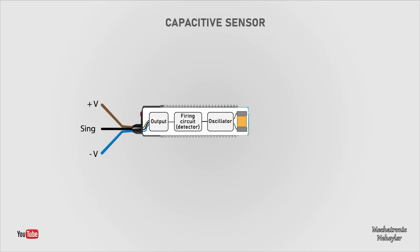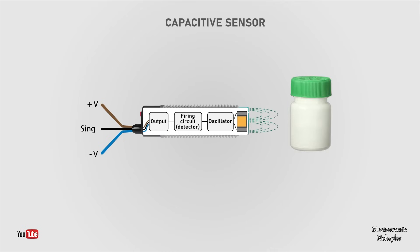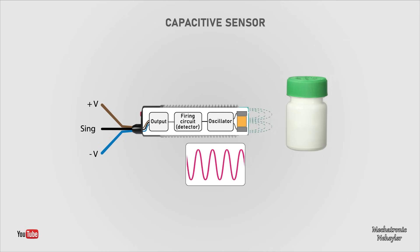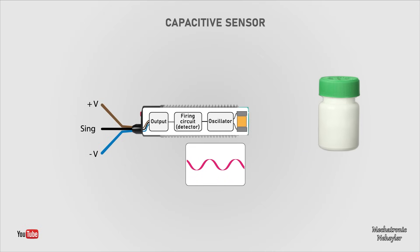Internally, the capacitive sensor consists of dielectric plates with a certain capacitance on the detector face, which emits an electrostatic field. The other important parts are the oscillator, which generates waves at a certain frequency, the trigger circuit, which is activated when it detects an object, and the output, where the signal is digitized. When an object approaches the sensor, it produces changes in capacitance which alter the electrostatic field. The oscillator remains inactive when the object is outside the field, but if an object gets closer, the oscillator moves at maximum frequency and amplitude. If the object moves away, the oscillator returns to its default state.